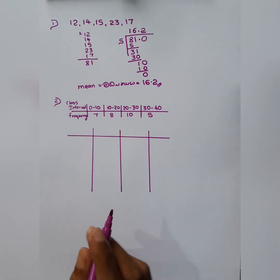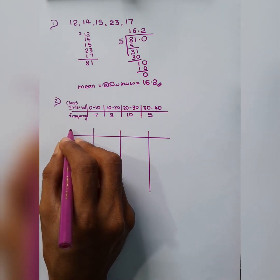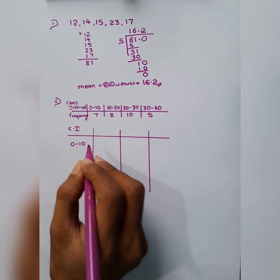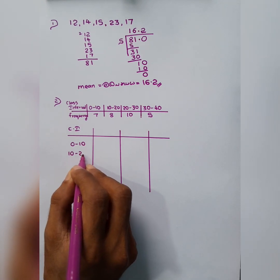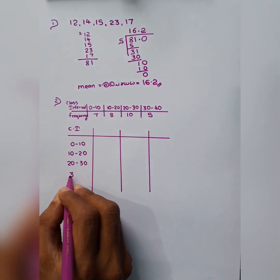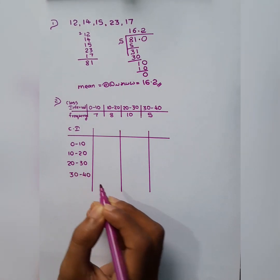So here the method. Class interval. Just keep marking them. 0 to 10, 10 to 20, 20 to 30, and 30 to 40.